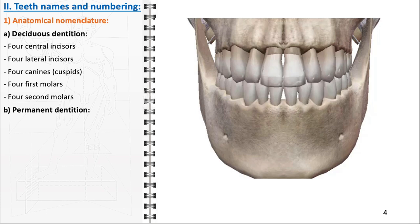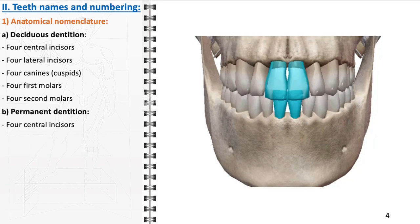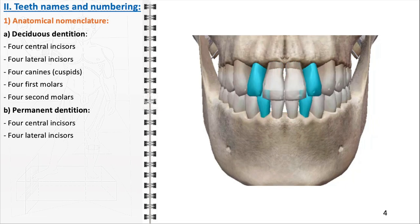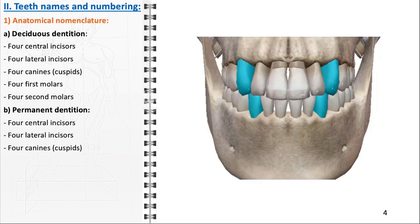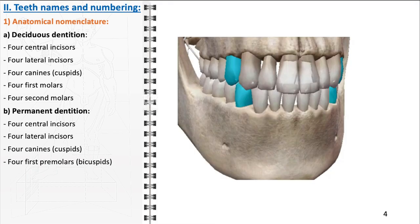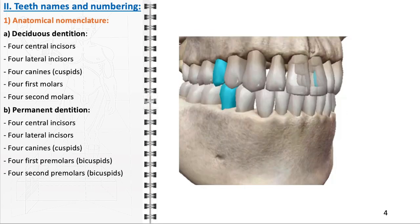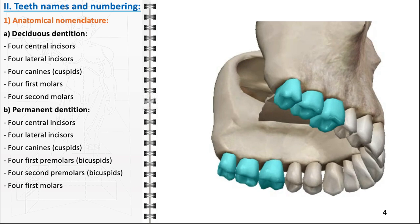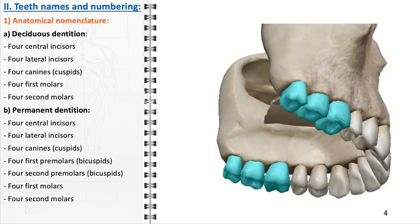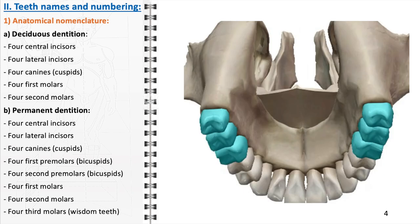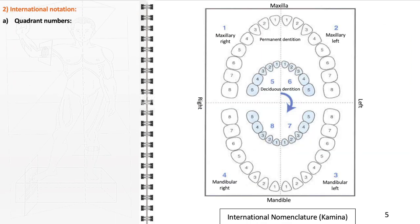Moving on to permanent dentition, these teeth gradually replace the deciduous teeth starting around age 6. An adult typically has 32 permanent teeth. This set consists of four central incisors, four lateral incisors, four canines retaining their sharp pointed shape for tearing, four first premolars and four second premolars (also known as bicuspids) which assist in chewing and grinding, four first molars, four second molars, and finally four third molars, commonly known as wisdom teeth, which usually emerge in late adolescence or early adulthood.